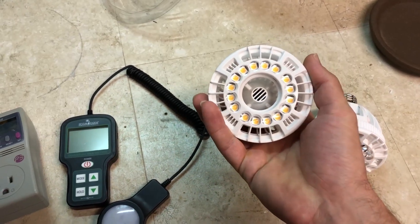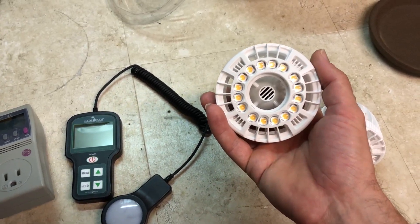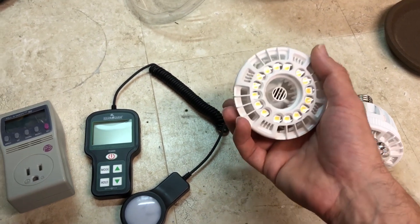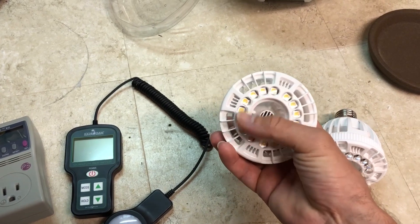Now, if you want to technically define what a white LED is, a white LED is technically a fluorescent light. Now, I know what you're thinking. How could it be a fluorescent light?